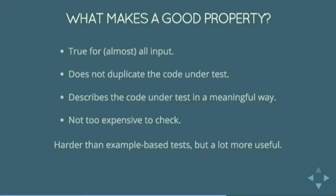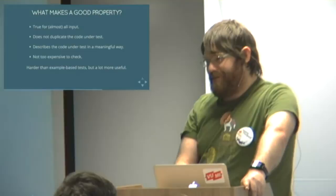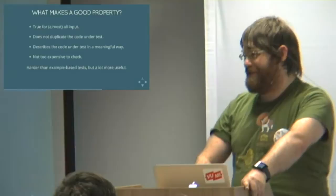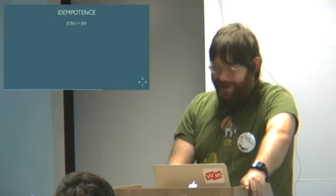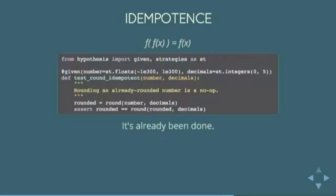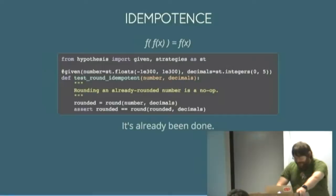So good properties are harder to write than good example-based tests but you need far fewer of them to get much better coverage of your code and input space. And they're a lot more useful. They're more useful as documentation than example-based tests. Things that you might use as properties: idempotence. If you have an operation where if you apply it to the output it doesn't change, that's an easy thing to test a property for. Once you've rounded a number it is round. If you try and round it again it's not going to change at all.